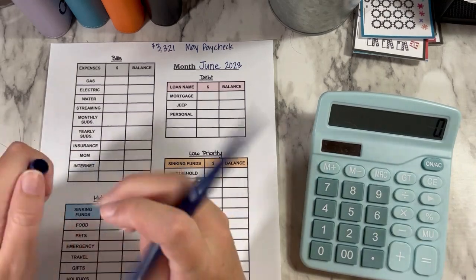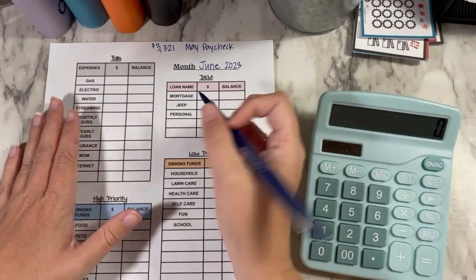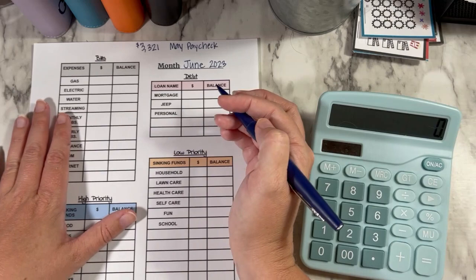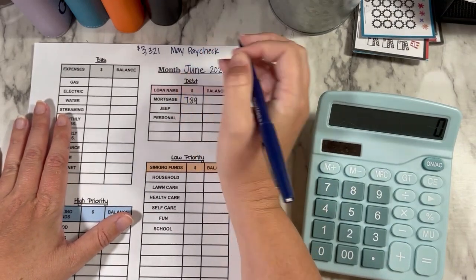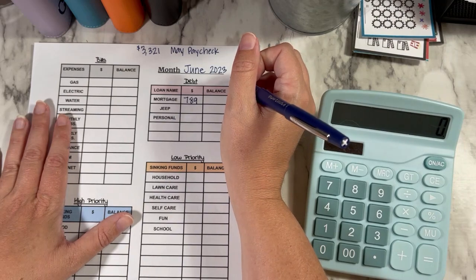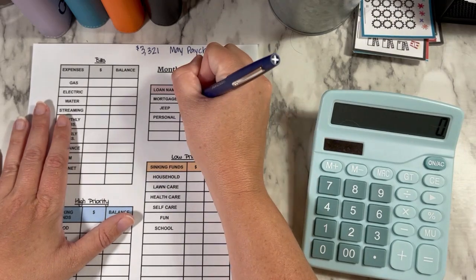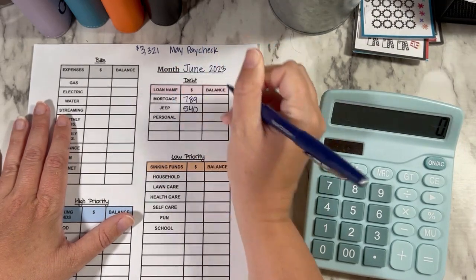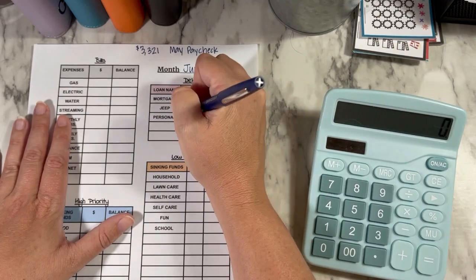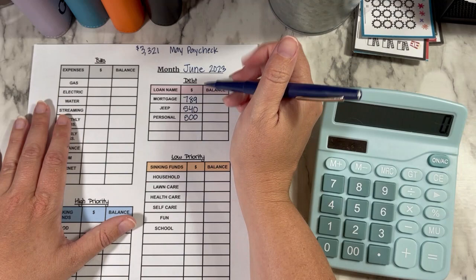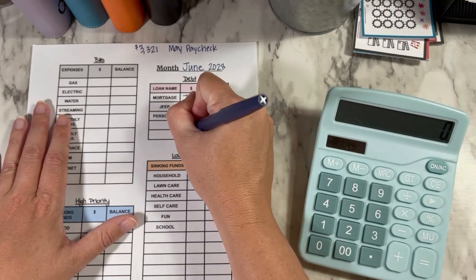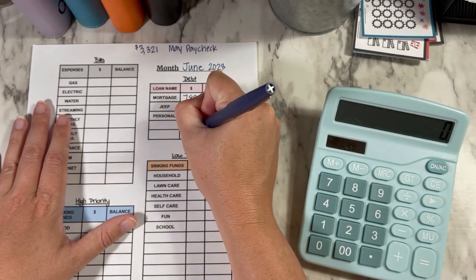Alright, so we're going to start with debt. My mortgage is $789 and then my Jeep payment is $540 and then personal loan is $500. And we're going to add all of that up and that is $1,829.